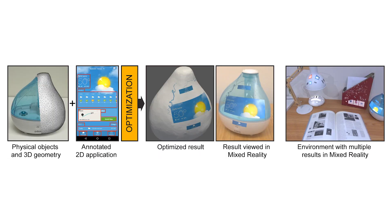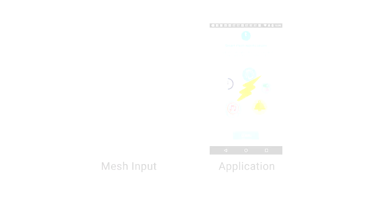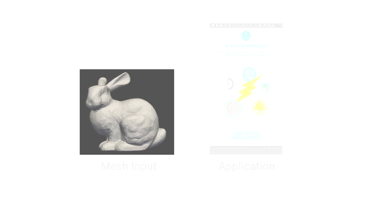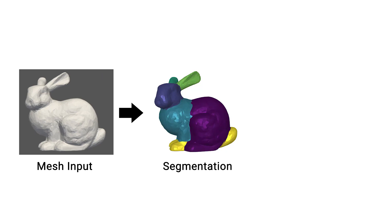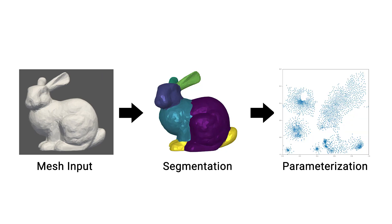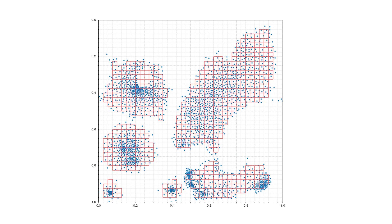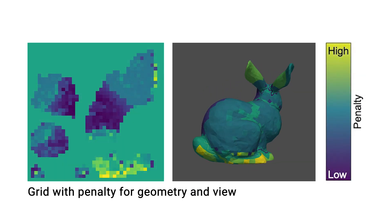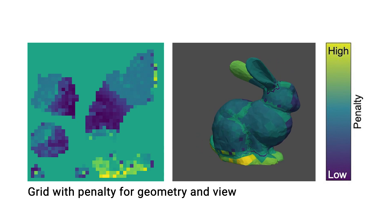We present an optimization-based approach that blends 2D applications into physical objects through mixed reality. Our system takes the mesh of an object and a 2D application as input. We first segment and parametrize the mesh to a UV map, then create a grid on top of the UV map.